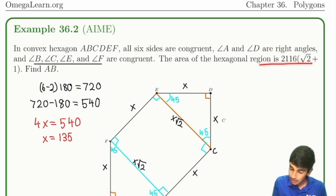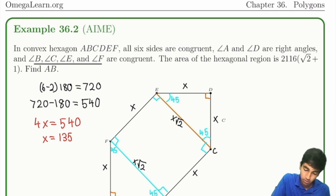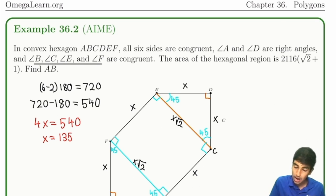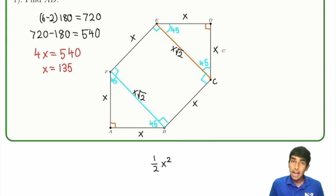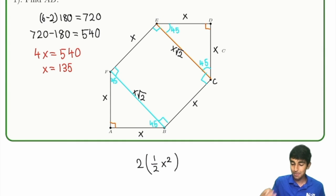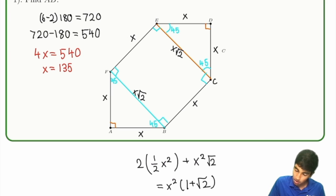Let's find the area in terms of X. We have two triangles, each with area (1/2) × base × height, and there are two of them. The rectangle in the middle has area X × X√2 = X²√2. Overall, the total area is X²(1 + √2). This equals 2116(√2 + 1), written as 1 + √2.